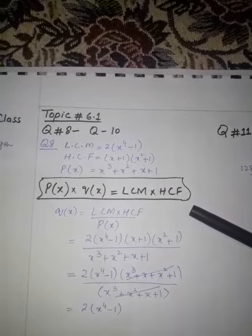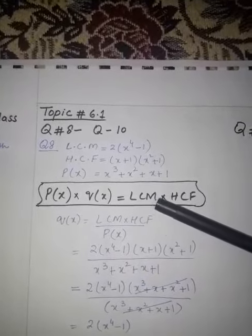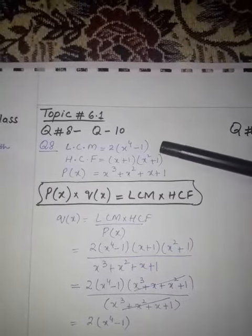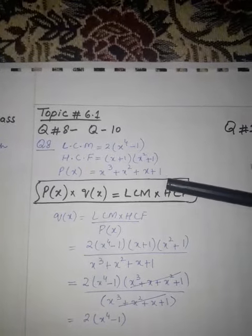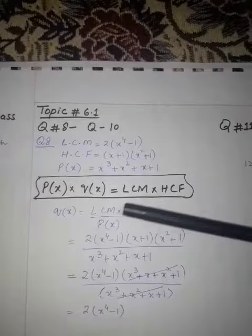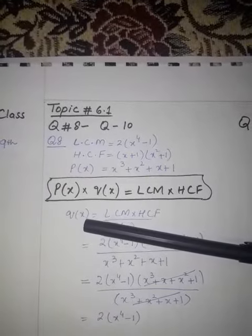p of x is first expression and q of x is second expression. LCM and HCF: LCM is given, HCF is given, and p of x is given, so we have to find out q of x. q of x is on left hand side and LCM multiplied by HCF divided by p of x.